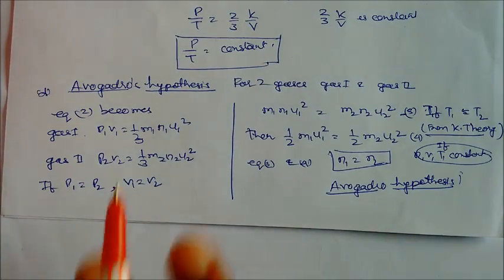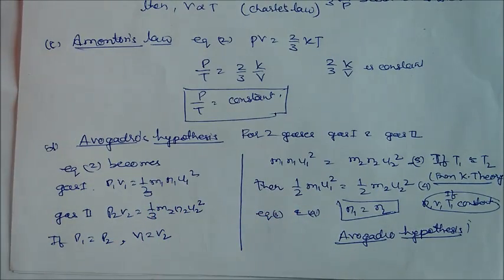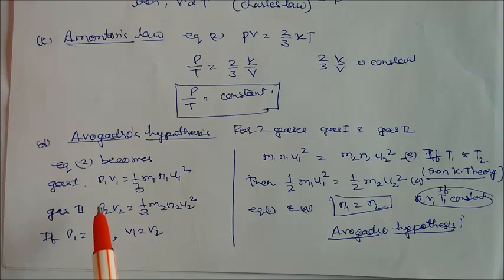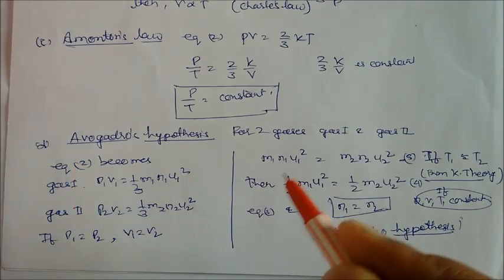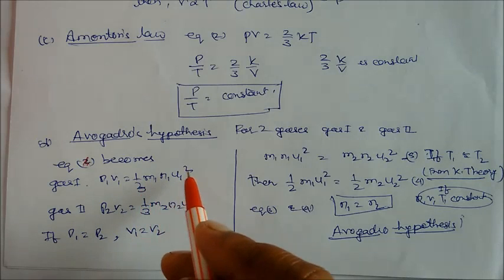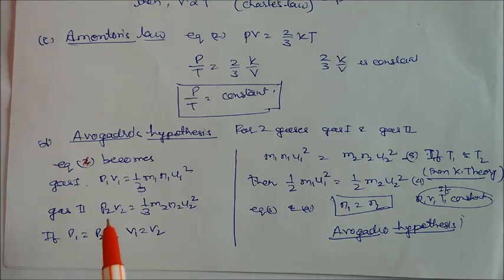For Avogadro's hypothesis, we already know that the volume of any gas is proportional to the number of moles, provided pressure and temperature are the same. Consider two gases under similar conditions. For gas 1: p₁V₁ = (1/3) × m₁ × N₁ × u₁². For gas 2: p₂V₂ = (1/3) × m₂ × N₂ × u₂². The masses, number of molecules, and velocities are all different for each gas.